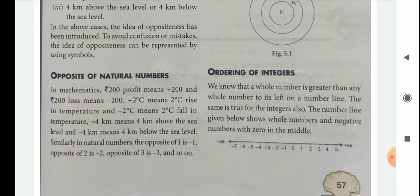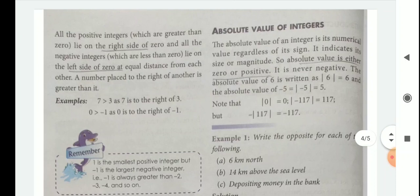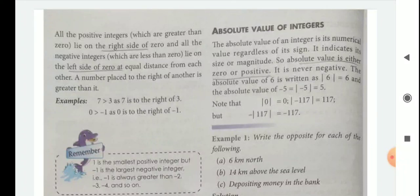Then, ordering of integers. We know the number line for whole numbers and natural numbers. Negative integers are always on the left side of 0. All positive integers, which are greater than 0, lie on the right side of 0. A number placed to the right of another is greater than it — for example, 7 is greater than 3 because 7 is to the right of 3, like 0 is greater than minus 1.